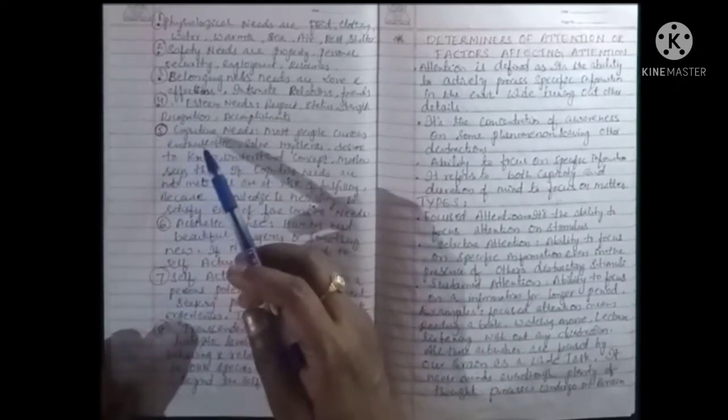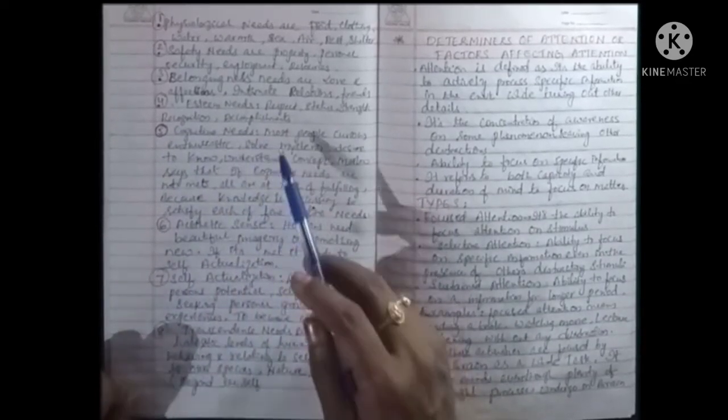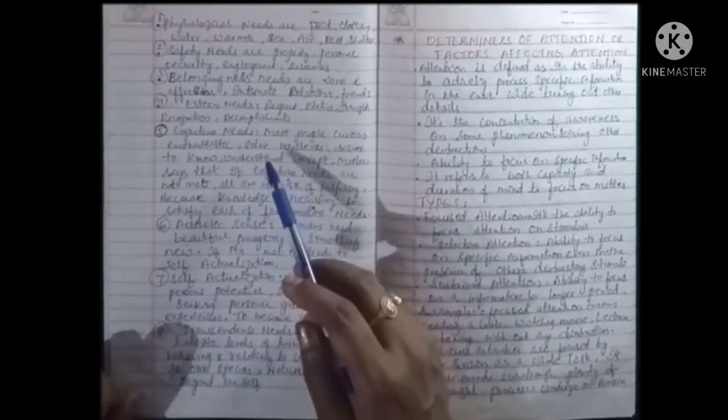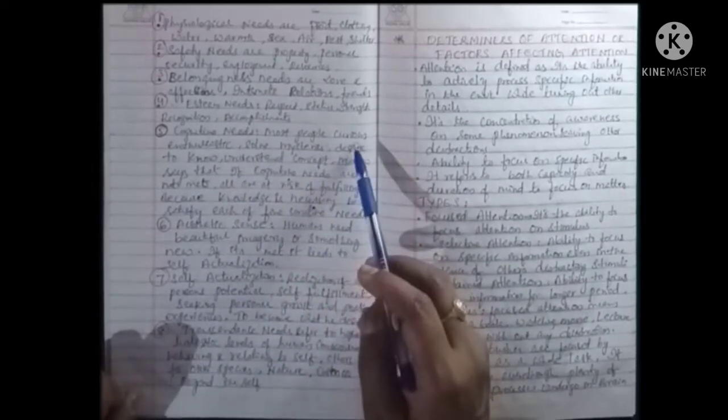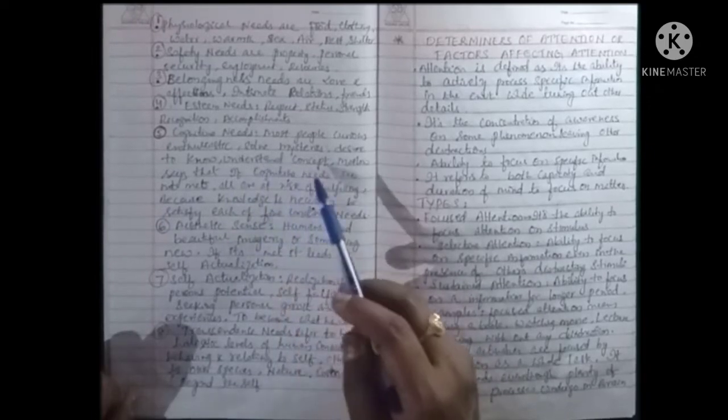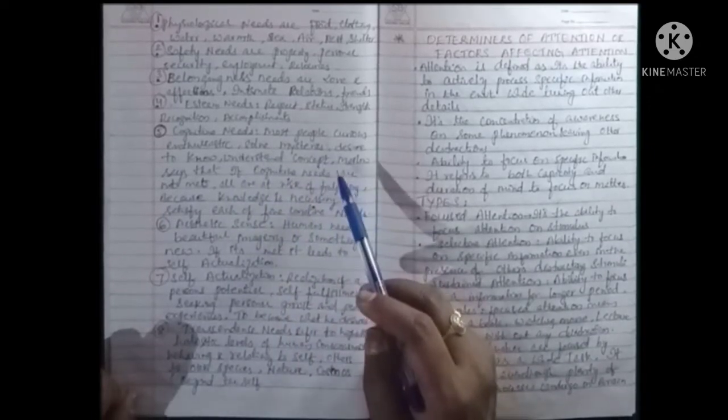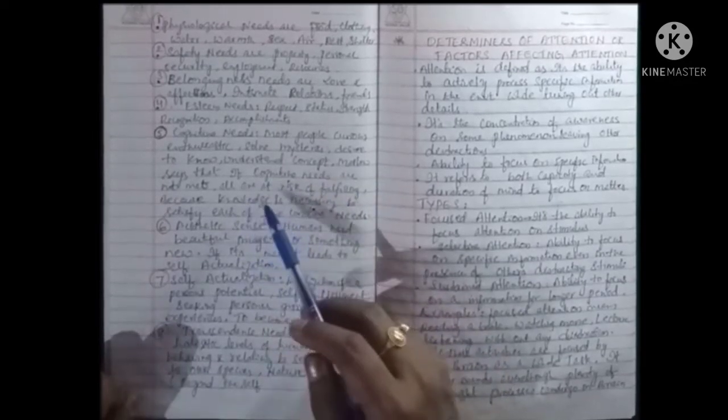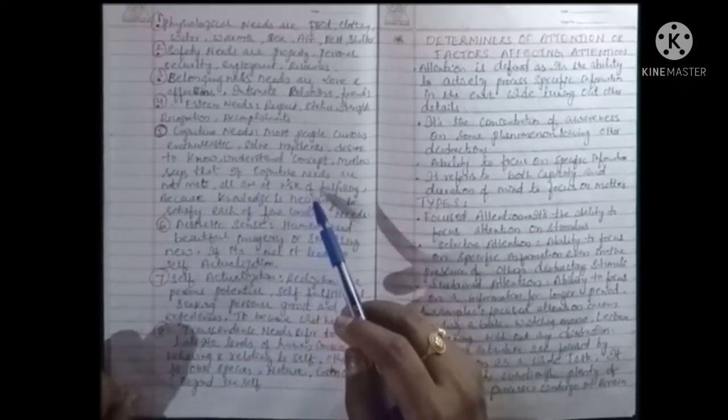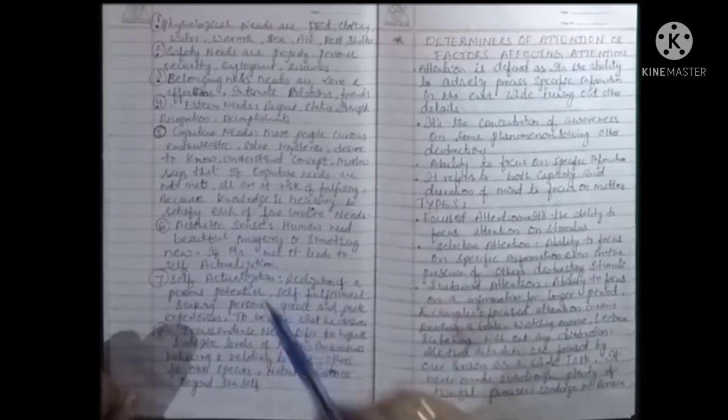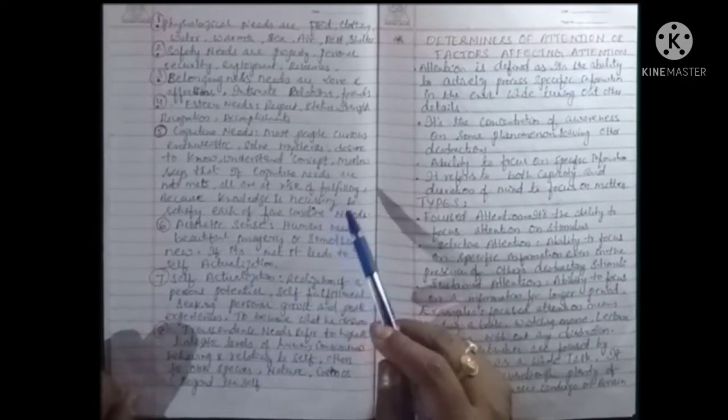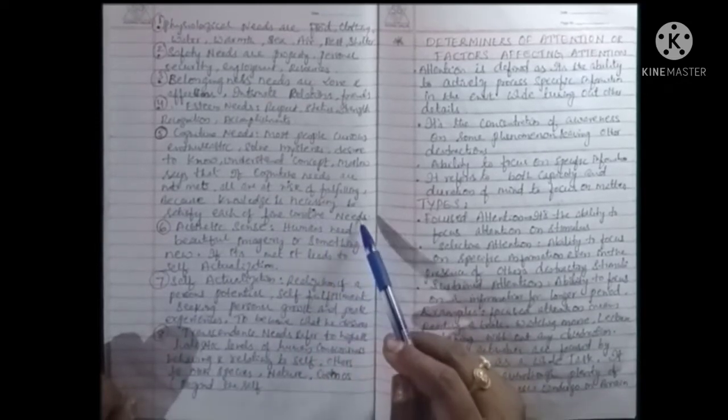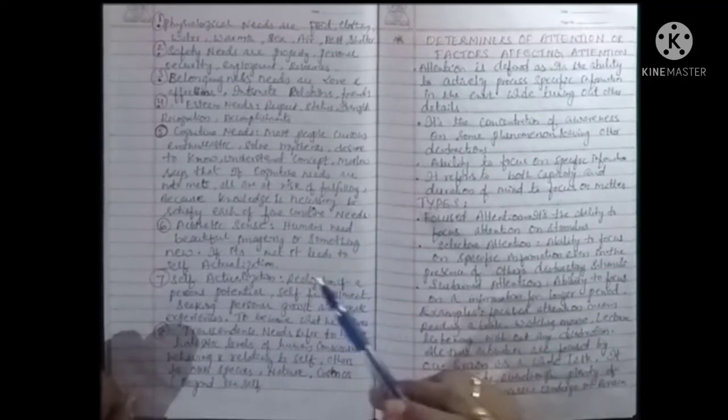The fifth level is cognitive needs. Most people are curious, enthusiastic, they can solve mysteries, desire to know, understand concepts. Maslow says that if cognitive needs are not met or are at risk of not being fulfilled, because knowledge is necessary to satisfy each of the five connective needs. Connective needs means basic needs.